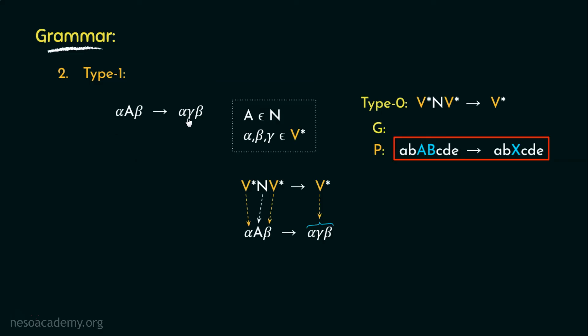Well, that is because, along with this newly specified structure of the production rule, the added restriction is, mod of alpha A beta should be less than or equal to mod of alpha gamma beta. That is, the right hand side of the production should have at least same or more number of elements in it as compared to the left hand side of the production rule. And due to this restriction, type 1 is also called length increasing grammar.